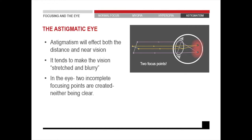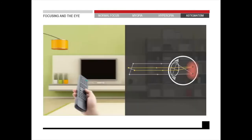In the eye, two complete focusing points are created, neither being clear. The two points can fall with one in front of the retina and the other at the back, or they can both be in front or both at the back of the retina. If you look at this picture, you will see that all the lines in the horizontal direction are clear and all the lines in the vertical direction are blurry — the image is pulled in a direction, and that is what a person with astigmatism will be seeing.